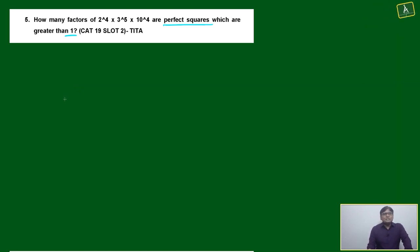Generally what we are doing in this type of questions, we are just converting all the powers to the nearest even number. Afterwards we are just taking all the possibilities and then we are finding the number of factors.